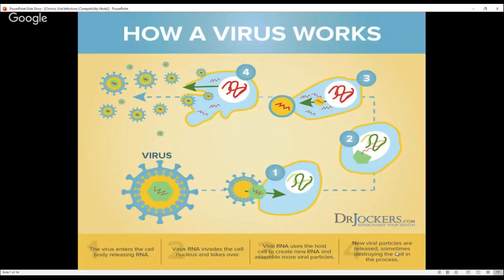Here's how a virus works: it gets into a cell and releases its RNA — genetic material that tells the cell what to do and what to create. It uses the host and the nutrients coming into the host, continuing to create more and more RNA. That RNA can impact our cells' genetic makeup and the way our mitochondria and organelles function. Over time, the RNA can end up causing destruction of the cell, creating dysfunction.